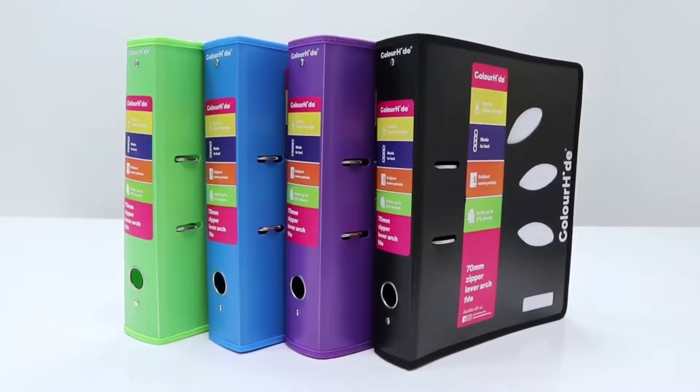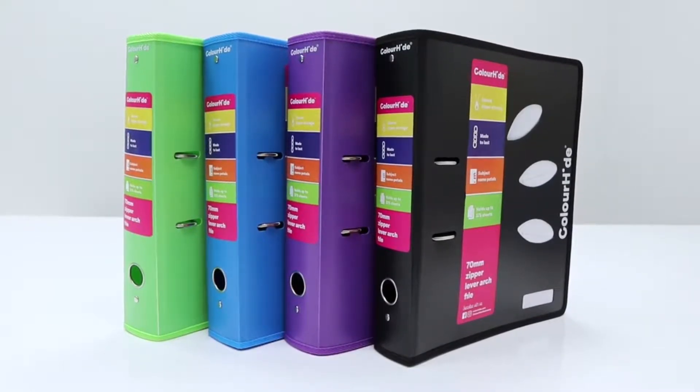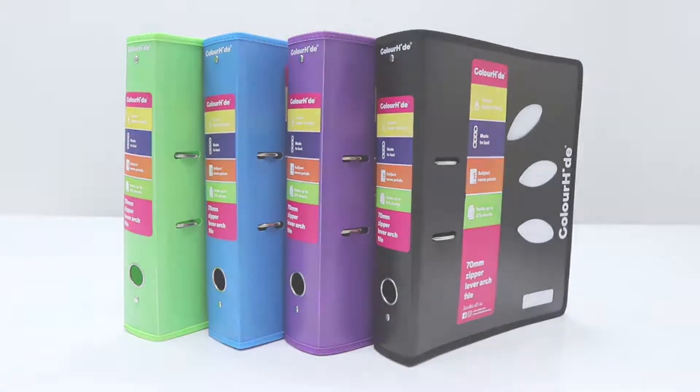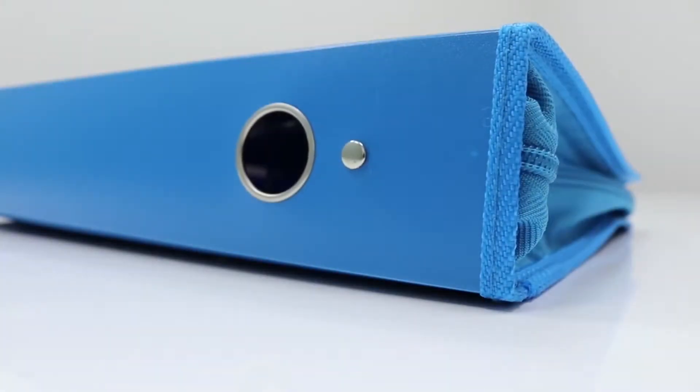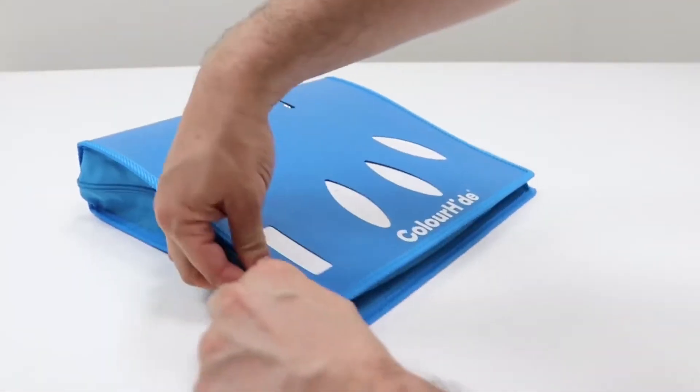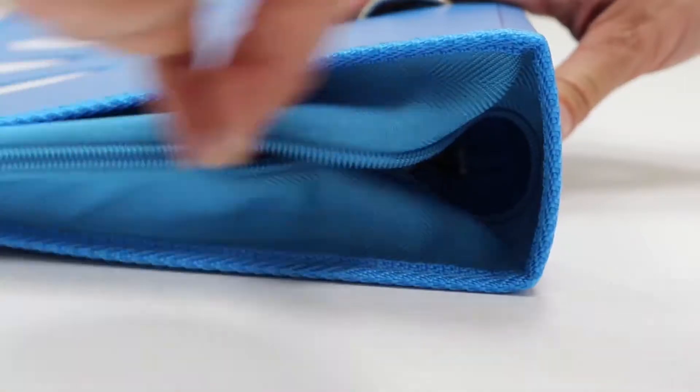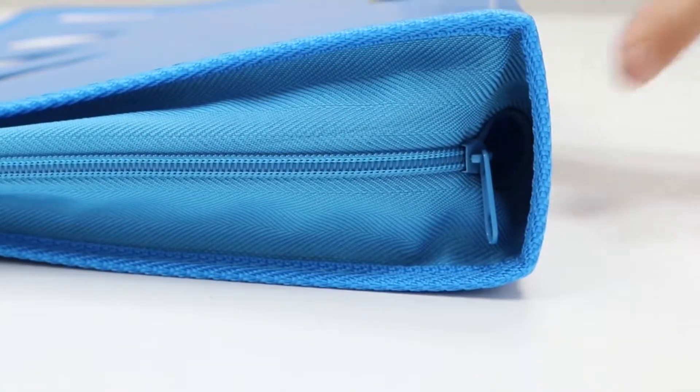Safely store and transport up to 375 sheets of paper inside this ColourHide lever arch file. This file has a durable construction and closes securely with a zip, protecting whatever you store inside from dust, scratches, and other wear and tear.